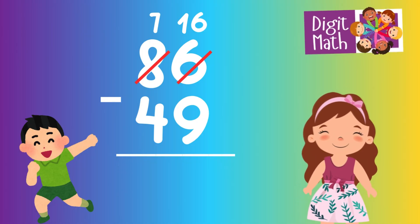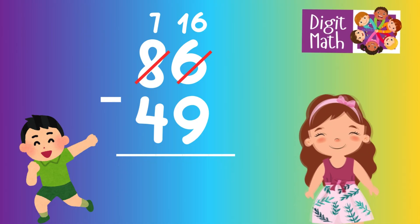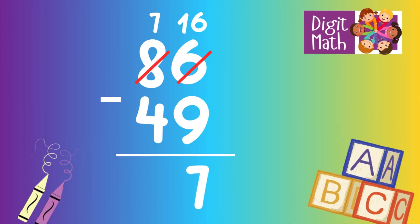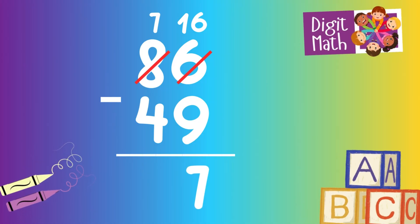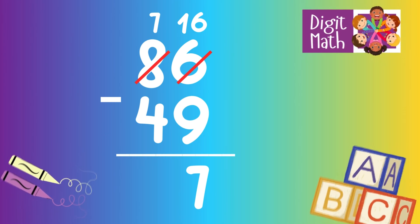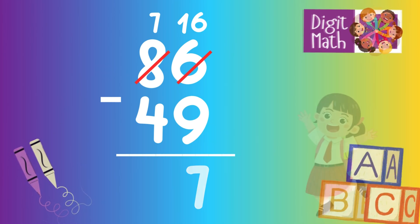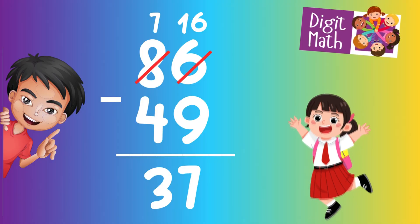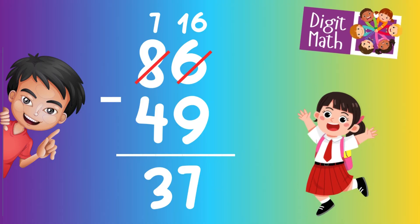Now we have 16 in the Units column. Subtract 9 from 16, which equals 7. In the Tens column, we now have 7. Subtract 4 from 7, which equals 3. So the final result is 86 minus 49 equals 37.